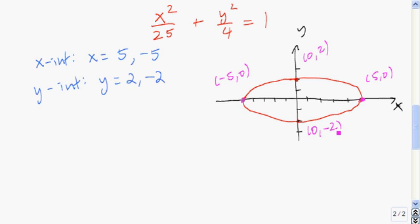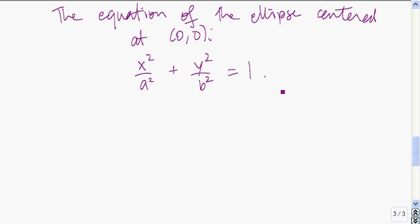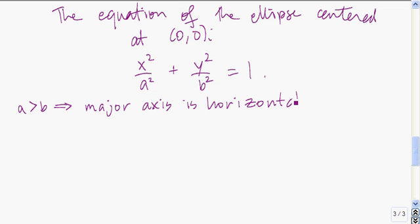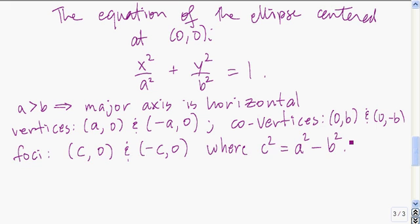Now let's discuss the equations of ellipses in general. The equation of an ellipse always looks like this: x-squared over a number plus y-squared over a number equals one. If a is greater than b, then the major axis is horizontal. In this case, the vertices are at a comma zero and negative a comma zero, and the co-vertices are at zero comma b and zero comma negative b. The foci are at c comma zero and negative c comma zero, where c-squared equals a-squared minus b-squared.